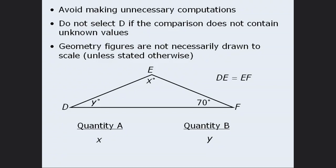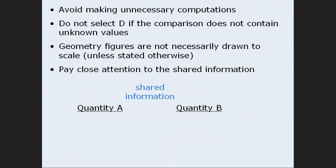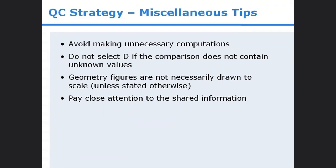In fact, if you do apply the rules of geometry, you will find the answer here is B. The last tip to consider is this: pay very close attention to the shared information in the middle of the two quantities. Here you'll often find key information about the quantities, and neglecting to factor in this information can easily cause you to make incorrect conclusions. So these are some additional tips to consider when tackling quantitative comparison questions. As you work your way through our course, be sure to revisit this module to remind yourself of all of the strategies you learned here.